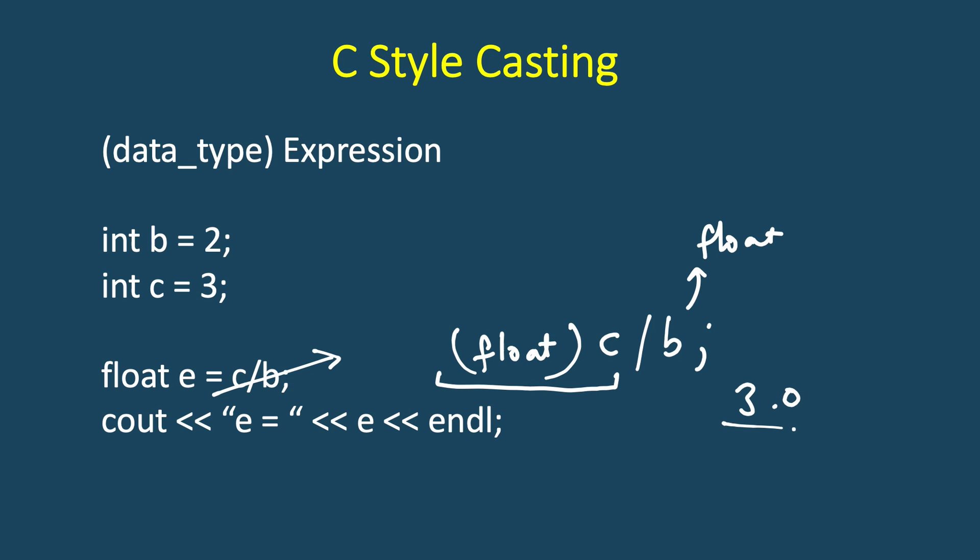And then we will have the same thing, 3.0 divided by 2.0, and the result will be calculated as 1.5. And then we will be saving it to a float variable, so it will be saved as this result only. And when we print this we will get 1.5, which is the expected value.